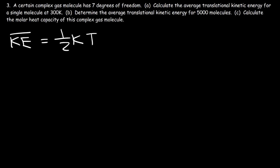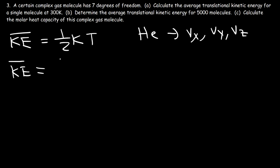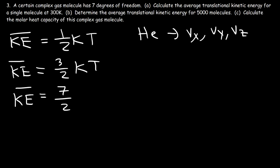For a monoatomic gas like helium, which has 3 degrees of freedom and 3 velocity components (Vx, Vy, Vz), the average kinetic energy for a single molecule is (3/2)k_B·T. In this case, we want the average translational kinetic energy for a complex gas molecule with 7 degrees of freedom, so it's going to be (7/2)k_B·T.